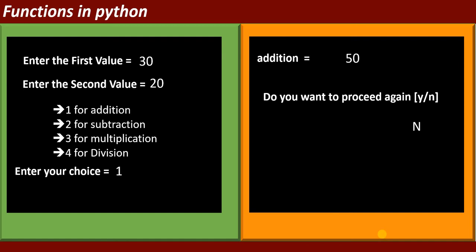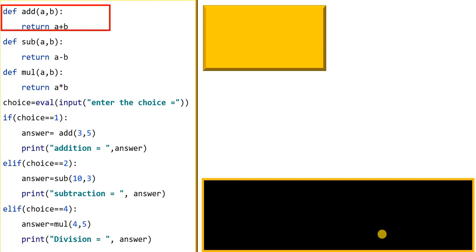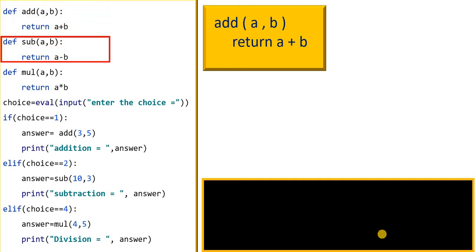Now I am entering N to stop. Here I want to give the concept of how a function works. Suppose you have written one function named 'add' and it takes two parameters A and B and it will return the addition of A and B. Same way, I have defined another function with the name 'sub' — it also takes two parameters A and B and returns A minus B.